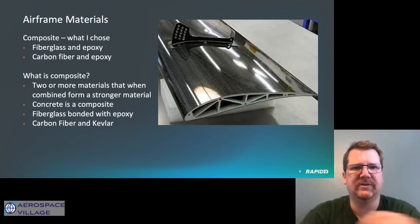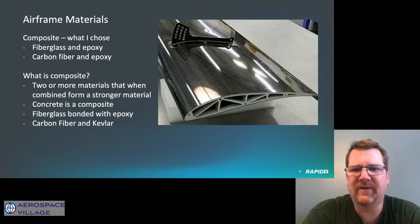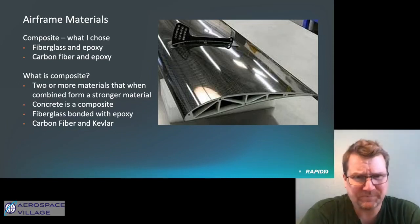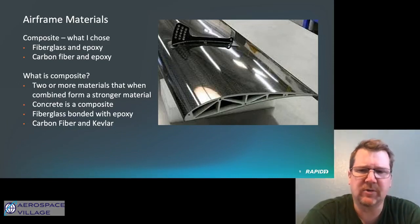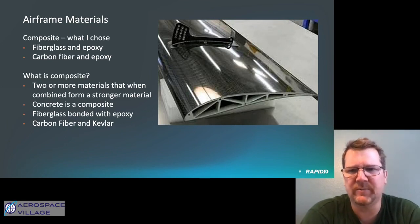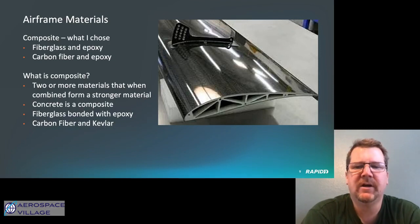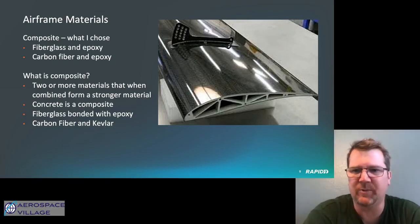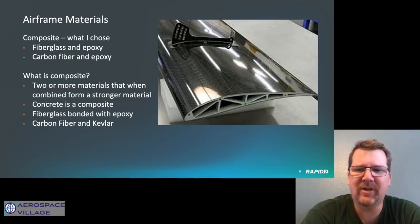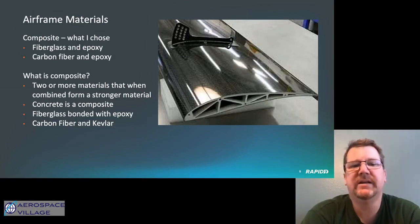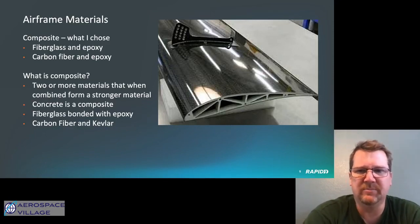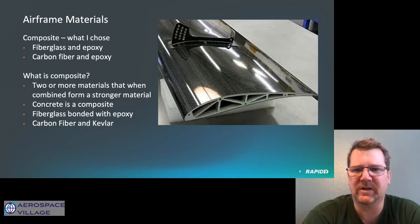Now we get to my favorite: composite. This is what I chose — fiberglass and epoxy, or carbon fiber and epoxy. What is composite? Any time you combine two materials and those two materials together form a stronger material, you get a composite. Concrete is a composite material — you have aggregate, sand, and cement. Fiberglass by itself is not a composite; fiberglass bonded with epoxy is a composite. Carbon fiber and Kevlar — not bulletproof Kevlar, but an abrasion-resistant Kevlar — are also fabric materials used in composite construction. Newer aircraft like the Dreamliner are all composite construction, and the 777X uses composite wings.